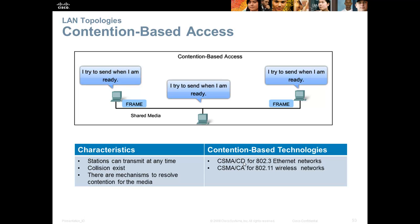Ethernet uses CSMA/CD — carrier sense multiple access collision detection — meaning we detect collisions when they happen. Two devices transmit simultaneously, their signals collide, everyone in the network is notified, and data is retransmitted. We listen for absence of signal on the wire, and when we think the wire is clear, we send. Two computers can sense an empty wire at the same time, transmit simultaneously, and cause a collision. Wireless uses CSMA/CA — collision avoidance — trying to avoid collisions at all costs, resulting in more header overhead, which is why wireless speeds don't match advertised rates.